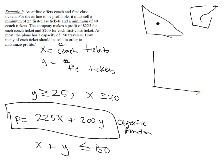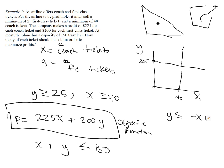If we begin to graph this with X as the number of coach and Y as the number of first class, then Y has to be greater than or equal to 25, so somewhere up here we need to be in that region. X has to be greater than or equal to 40, so we're in this region. With the last remaining function — rearranging and subtracting X from both sides gives us negative X plus 150 — that forms three corner points. Our feasible region is below that line, and we know this corner point is at (40, 25).